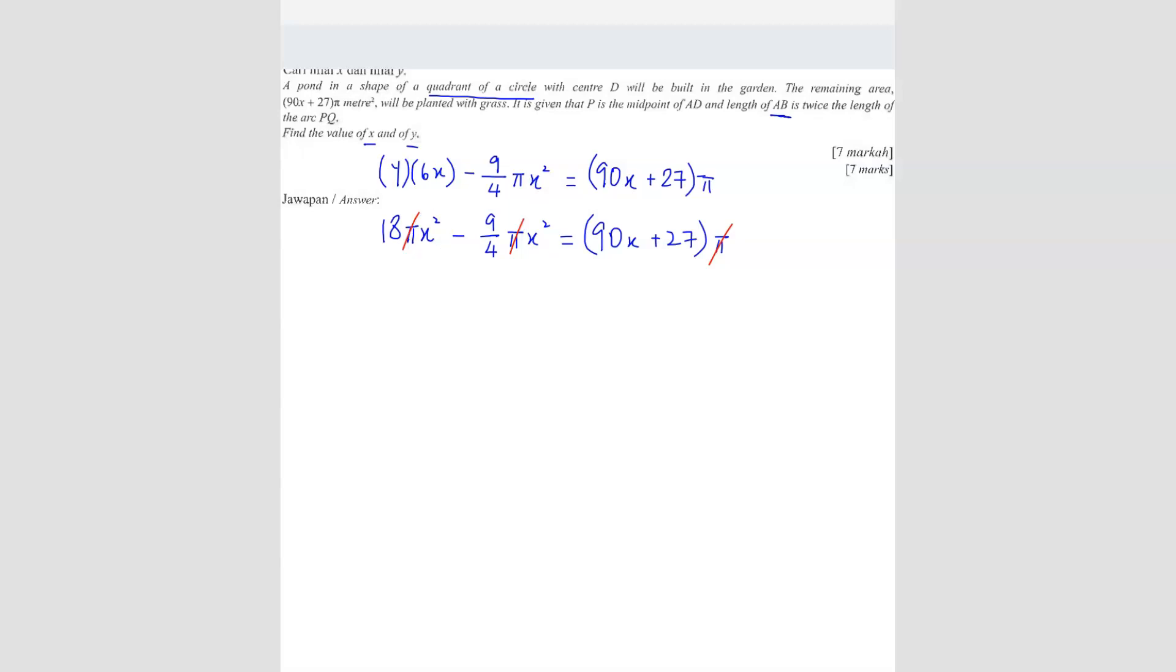Let us rearrange. So we have got 18 minus 9 over 4, both X square. So 18 minus 9 over 4 should be 63 over 4 X square minus 90X. I'm going to bring all this to the other side, so minus 90X minus 27 equals 0. So I'm going to multiply by 4 to remove the fraction. So I get 63X square minus 360X minus 108 equals 0.